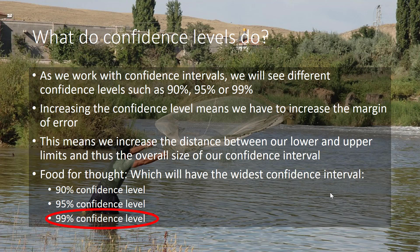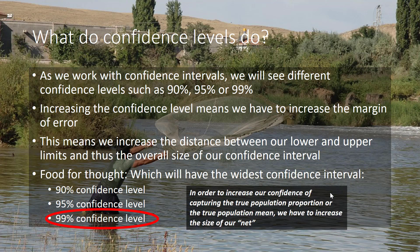The answer is a 99% confidence level. In order to increase our confidence of capturing the true population proportion or the true population mean, we have to increase the size of our net. That's why the background of this slide shows a person fishing with a net — literally, the bigger your net, the more fish you are likely to catch. Think about a confidence interval as a one-dimensional net: the wider we make it, the more numbers we can capture.